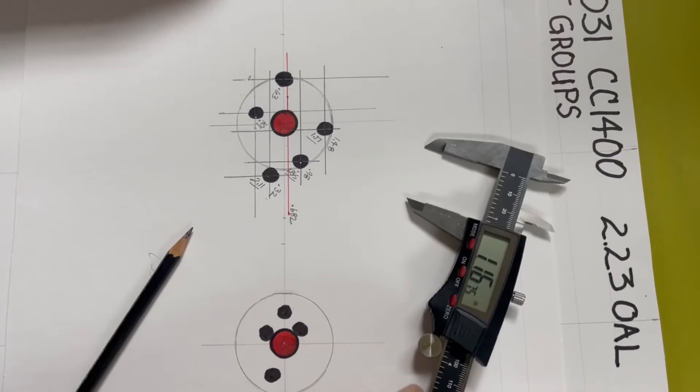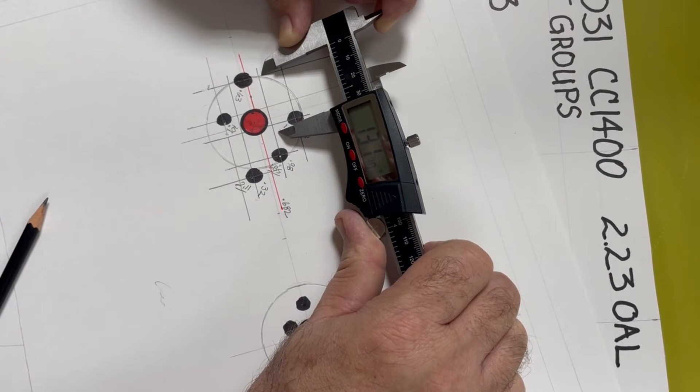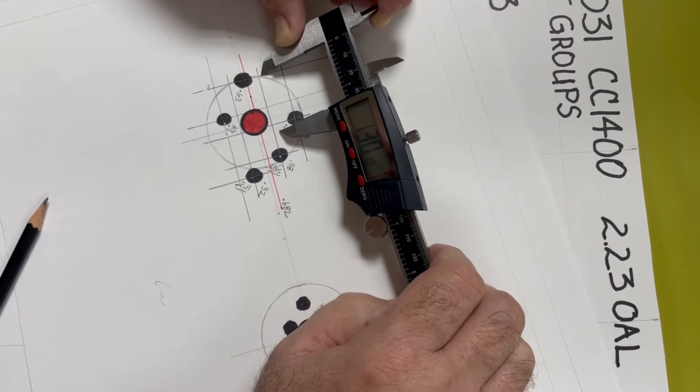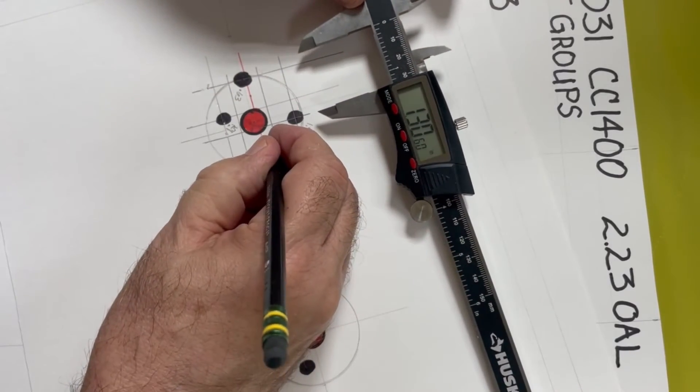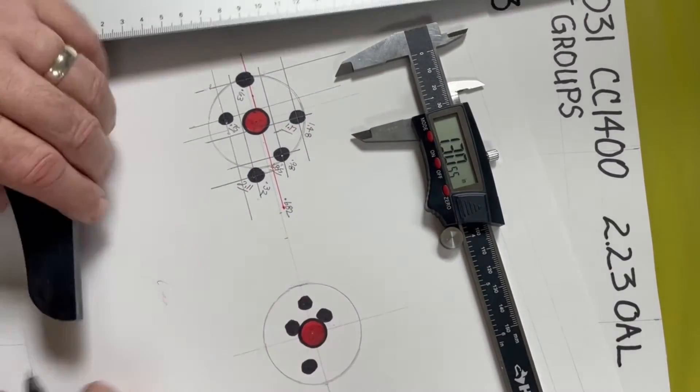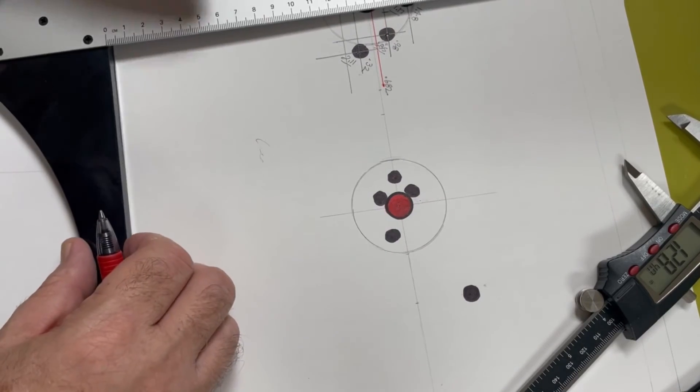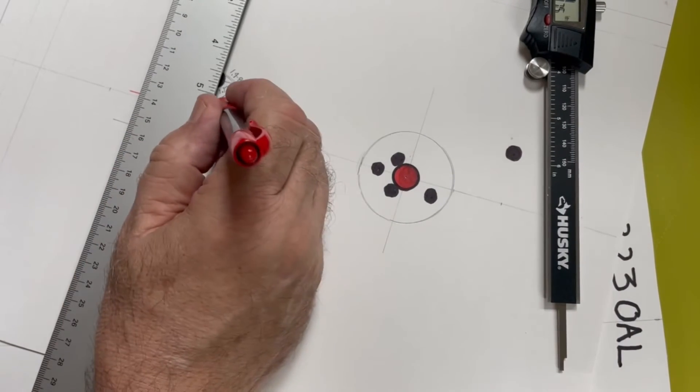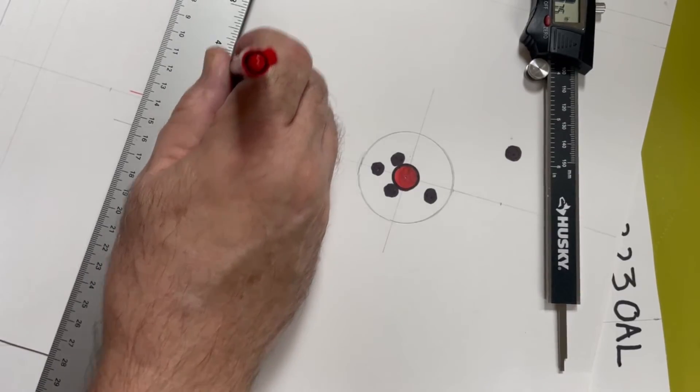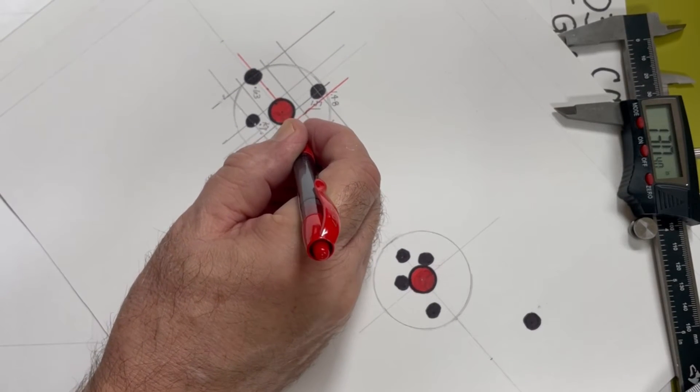So, we're going to go up 1.3 inches. 1.31, so I'm going to put that mark right there. And I can see that. So, the average center of the group is right here.